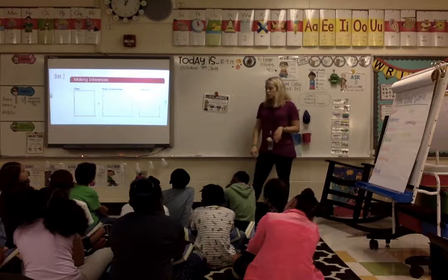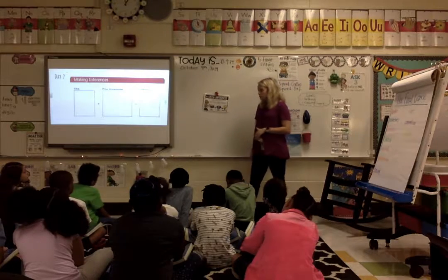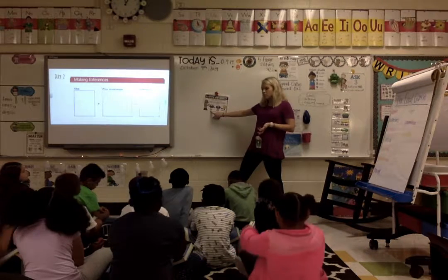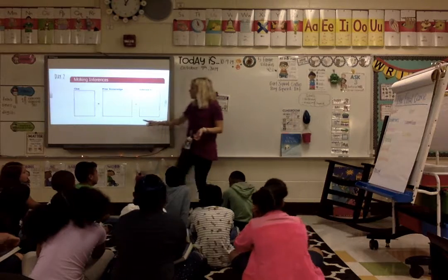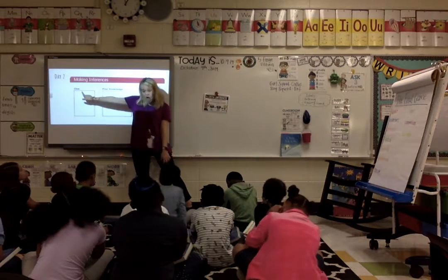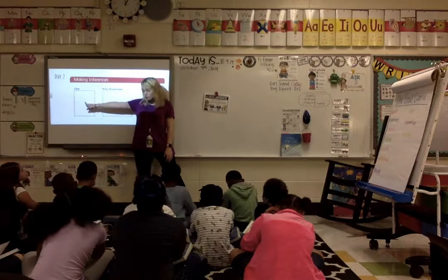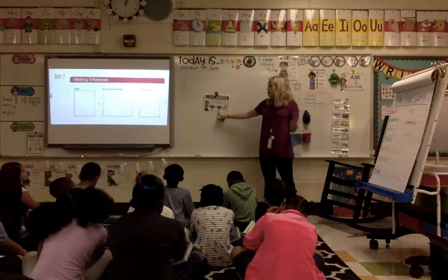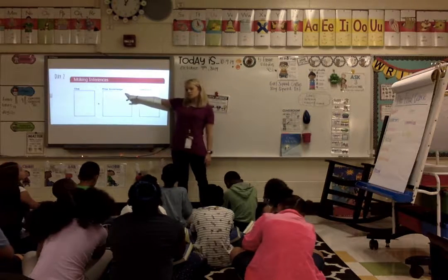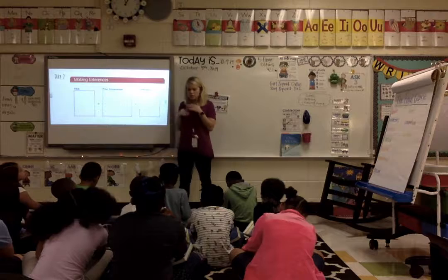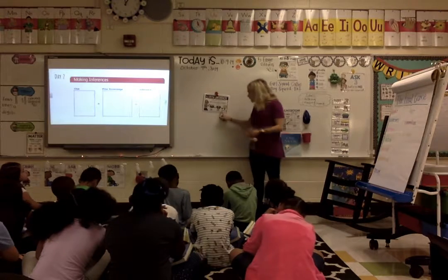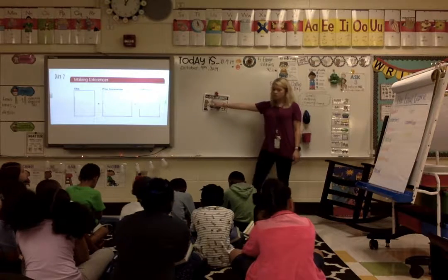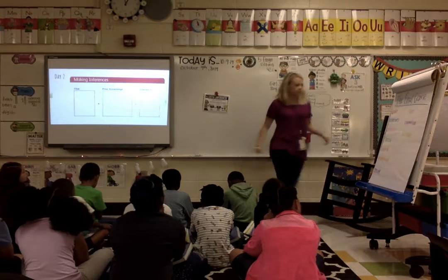This is a good graphic organizer to help us make inferences. The first part of making inferences is text clues. As we stop, we're going to write in here clues from the story. Next is 'what I know' — also called prior knowledge, which means knowledge you already have. And those two things equal an inference. So what are we doing today? Making inferences. Very good.